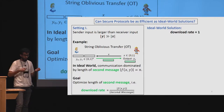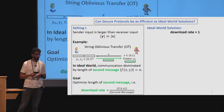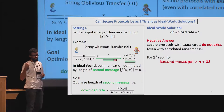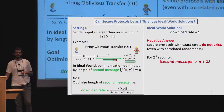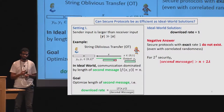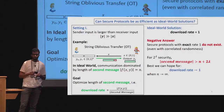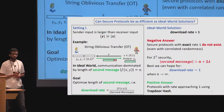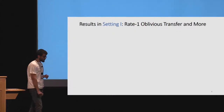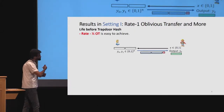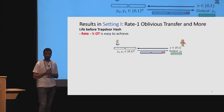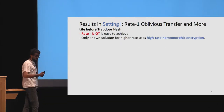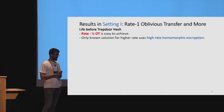Without security we can get an optimal download rate of exactly one. We ask whether we can match that in secure protocols. The bad news is that we cannot — specifically, if lambda is our security parameter, the length of the second message must exceed n by at least 2·lambda. So the best we can hope for is a download rate that approaches one as n grows larger, and this is exactly what we get with a trapdoor hash.